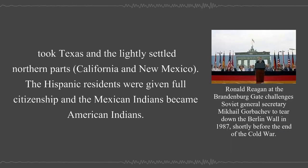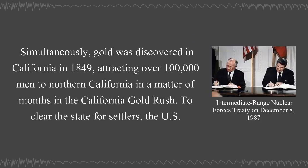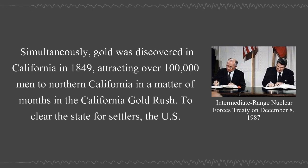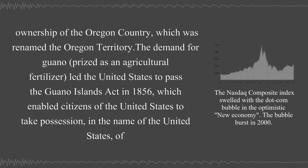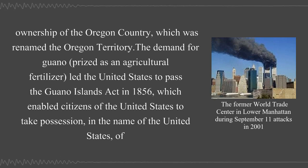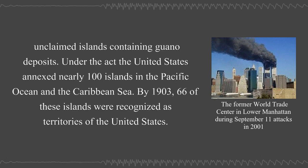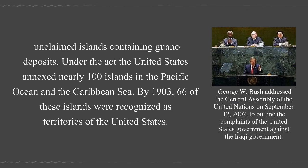Simultaneously, gold was discovered in California in 1849, attracting over 100,000 men to northern California in a matter of months in the California Gold Rush. To clear the state for settlers, the U.S. government began a policy of extermination since termed the California Genocide. A peaceful compromise with Britain gave the U.S. ownership of the Oregon country, renamed the Oregon Territory. The demand for guano, prized as an agricultural fertilizer, led the United States to pass the Guano Islands Act in 1856, which enabled citizens to take possession of unclaimed islands containing guano deposits. Under the act, the United States annexed nearly 100 islands in the Pacific Ocean and the Caribbean Sea; by 1903, 66 of these islands were recognized as territories of the United States.